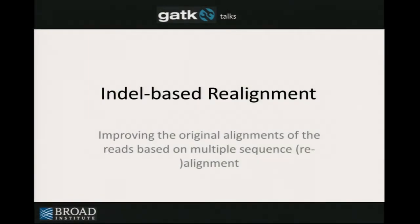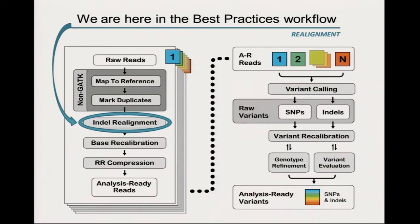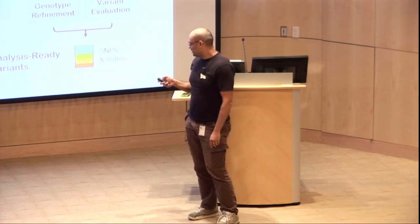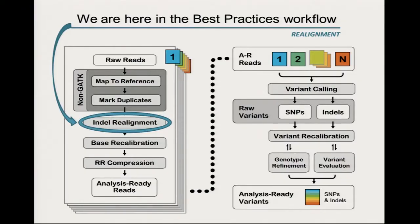I have the pleasure to give you an introduction to what will be the next step in the Best Practices Pipeline that we use. This is actually the first step implemented in the GATK framework. Its location right at the beginning, just after mapping and mark duplicates, is about getting the best possible alignment you can have, because the tools that follow assume that the alignment is correct.